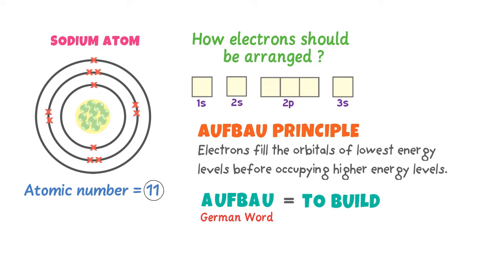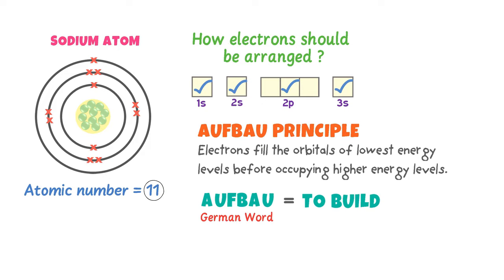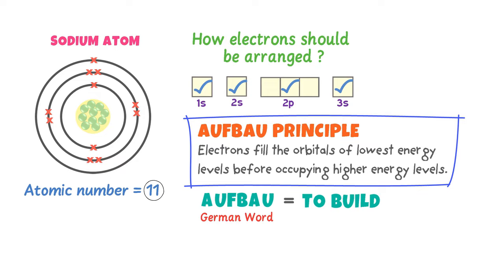In the case of sodium, firstly, electrons will fill the 1s orbital. Secondly, electrons will fill the 2s orbital. Thirdly, electrons will fill the 2p orbital. And finally, electrons will fill the 3s orbital — because the energy of 1s is smaller than 2s, and so on. Thus, the Aufbau principle teaches us about filling orbitals in increasing order of energy.